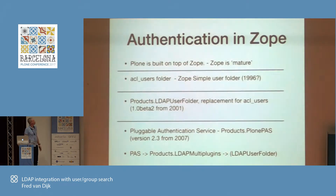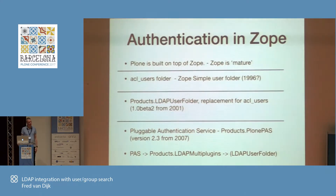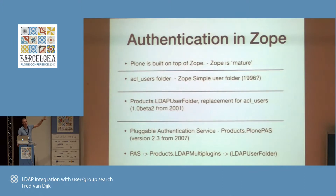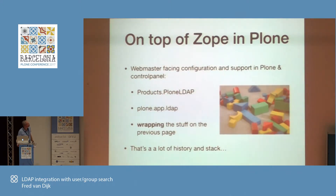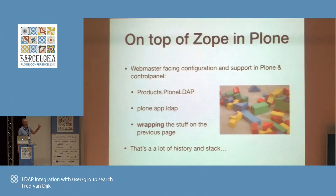What we already had is rather old. This is the authentication in Zope. We started with an ACL users folder, then Products LDAP User Folder around 2001, then the pluggable authentication service in Zope — version 2 was 2007. That's not even Plone; this is just what we built for Zope in the last 15 years. On top of that in Plone, we have PloneUp LDAP and Products Plone LDAP, which only wraps all the stuff that is in Zope. That's a lot of history, a lot of stack, and a lot of add-on products to learn.